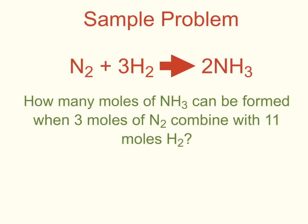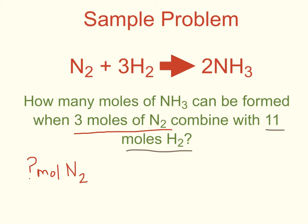The way I solve these problems is I start with whatever is given to me first — so three moles of nitrogen gas — and I make that my unknown. I want to find how many moles of nitrogen gas are necessary when I use all 11 moles of hydrogen gas, so that becomes my given. I put 11 moles of hydrogen gas over 1, and I want moles of hydrogen gas to cancel, so it has to go on the bottom of my next fraction.